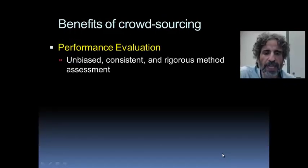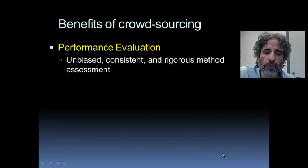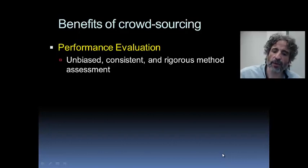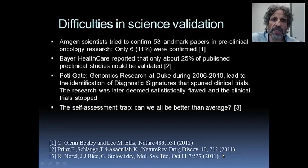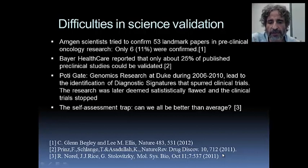The A of DREAM is assessment or performance evaluation. We would like to create a framework in which our predictions are robust, unbiased, consistent, and rigorous. This matters because science validation has been recognized as a serious problem. A few examples appear in the literature: scientists from pharmaceutical company Amgen tried to reproduce 50 landmark papers in preclinical oncology.